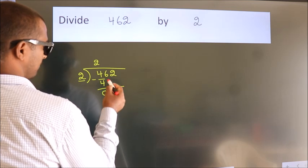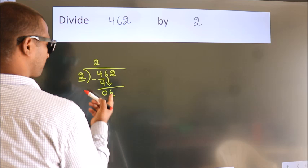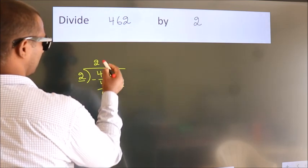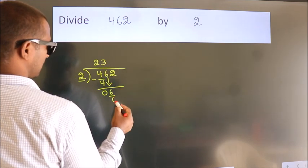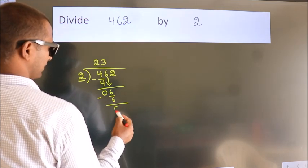After this, bring down the beside number. So, 6 down. When do we get 6? In 2 table. 2 times 3 is 6. Now, we subtract. We get 0.